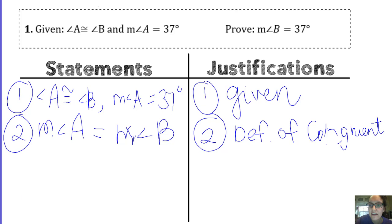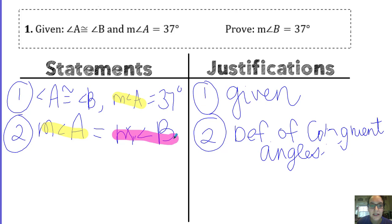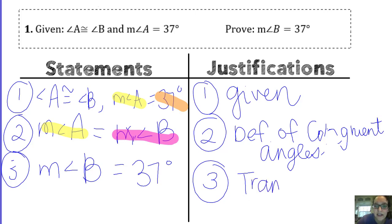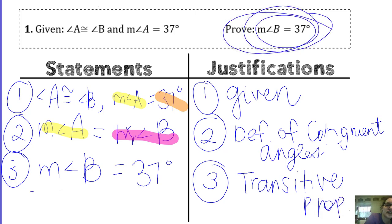Now I have three terms: the measure of angle A, the measure of angle B, and 37 degrees. Three starts with T — T for transitive. So my next statement is: the measure of angle B is equal to 37 degrees. The transitive property connects them — I sandwich them together. I double-check my proof statement: measure of angle B equals 37 degrees. It checks out — that's the last statement of my proof.